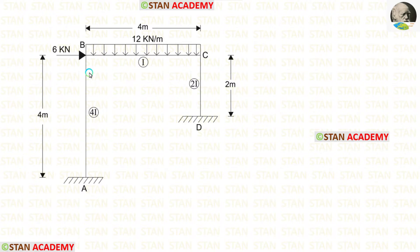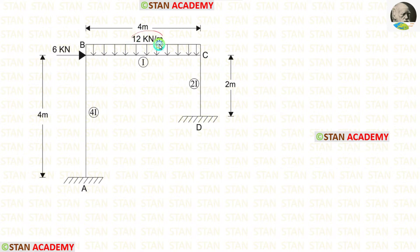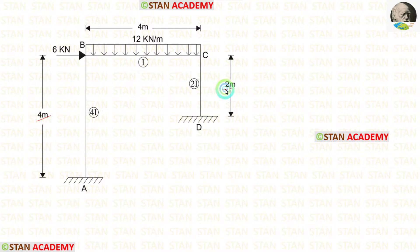In this frame, there are two columns: column AB and column CD. There is also a beam BC. In the columns, there are no loads. In the beam BC, there is a uniformly distributed load of 12 kilonewton per meter, acting for the full span. At point B, there is a nodal point load of 6 kilonewton acting towards the right side. The height of column AB is 4 meters, the height of column CD is 2 meters, and the length of beam BC is 4 meters.